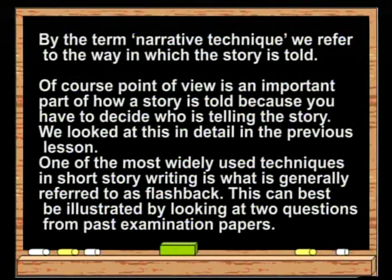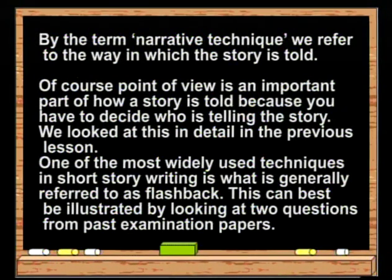We have seen how important it is to understand and pay close attention to the ideas of plot, characterization, setting, and point of view in the writing of the short story. In this lesson, we are going to discuss certain specific areas of narrative technique that are essential for you to write a successful story at the CXC level. By the term 'narrative technique', we refer to the way in which the story is told. Point of view is an important part of how a story is told, and we have looked at this in detail in the previous lesson.